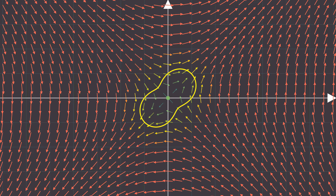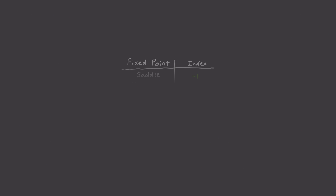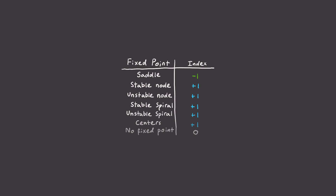So this means we can do away with talking about the index of a specific curve, and instead talk about the index associated with specific fixed points. It turns out that saddles will always produce an index of minus one, and literally all other fixed points — stable or unstable nodes, stable or unstable spirals, or nonlinear centers — will produce an index of plus one. And if the curve doesn't enclose a fixed point at all, then the index will be exactly zero.